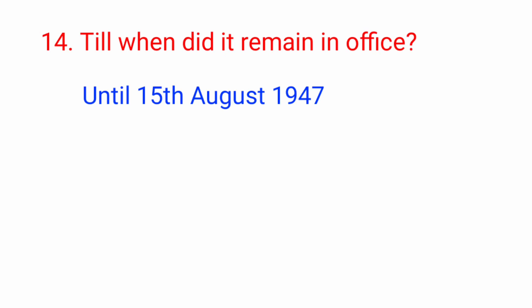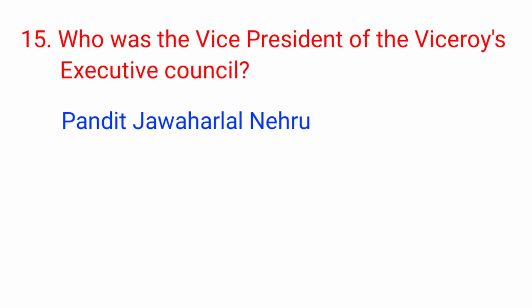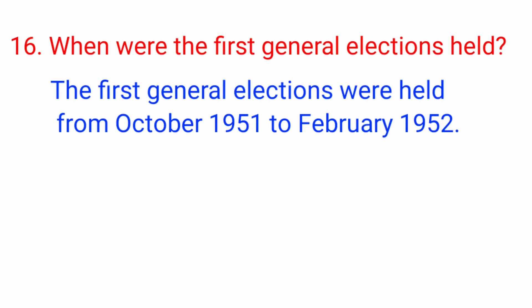Question number 14: Till when did the interim government remain in office? Answer: until 15th August 1947. Question number 15: Who was the vice president of the Viceroy's Executive Council? Answer: Pandit Jawaharlal Nehru. Question number 16: When were the first general elections held? Answer: the first general elections were held from October 1951 to February 1952.